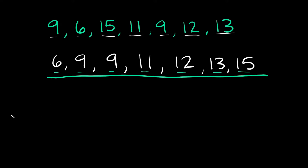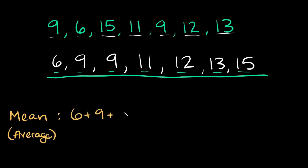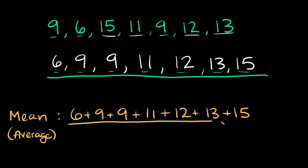So to find the mean — remember, this is another word for average — we're going to do 6 plus 9 plus 9 plus 11 plus 12 plus 13 plus 15, and then divide this whole thing by 7. If we add all those numbers up, we get 75. So our total is 75, and we're going to divide that by 7.